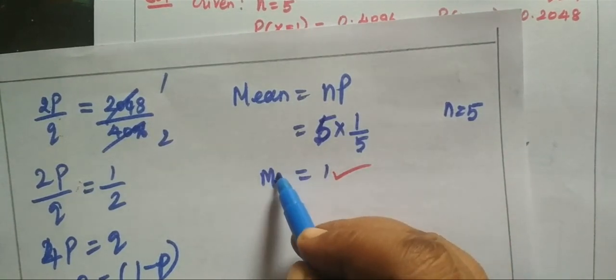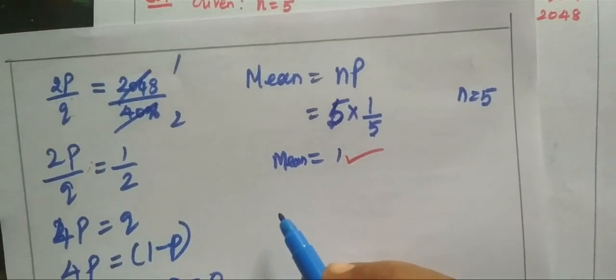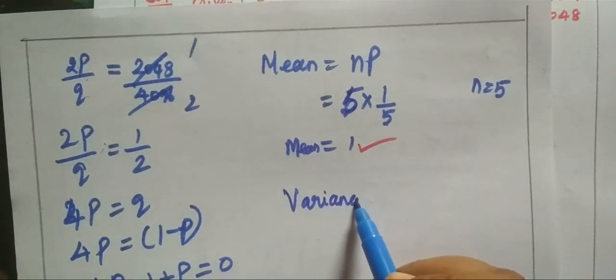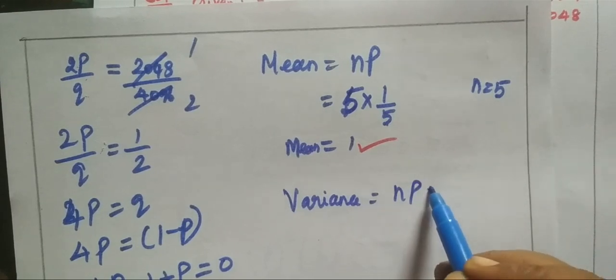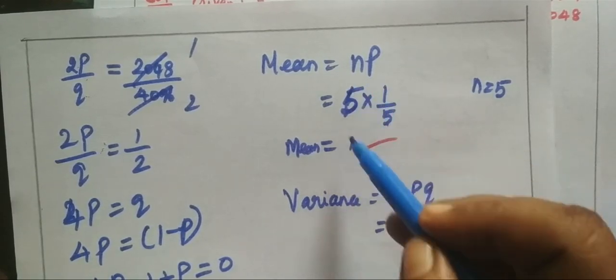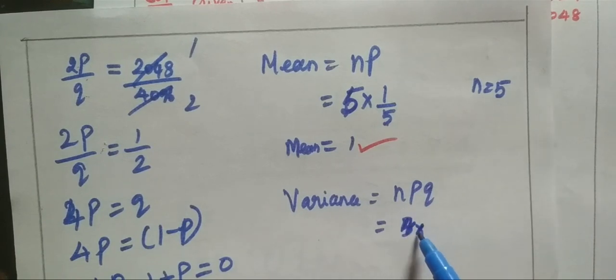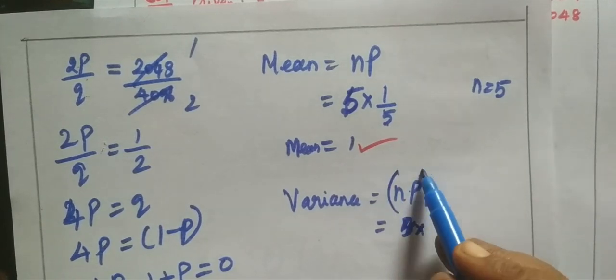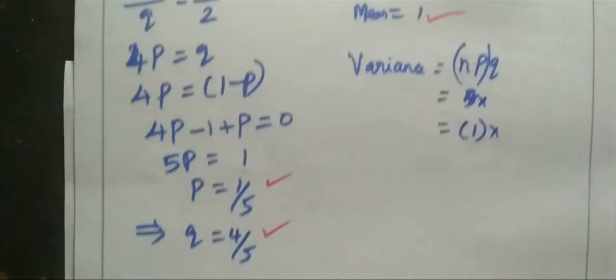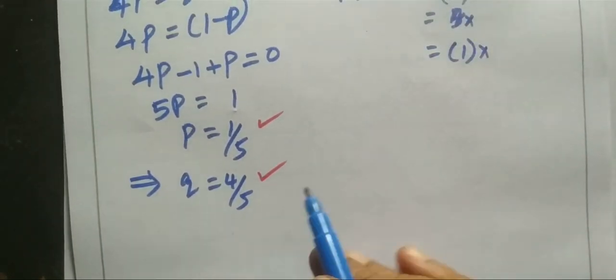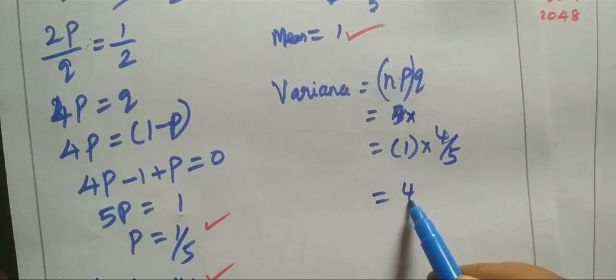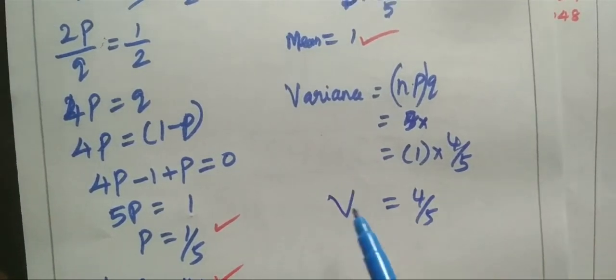Next, variance. Variance formula is npq. So, 5 into p which is 1 by 5, into q which is 4 by 5. This equals 4 by 5. So, this is variance.